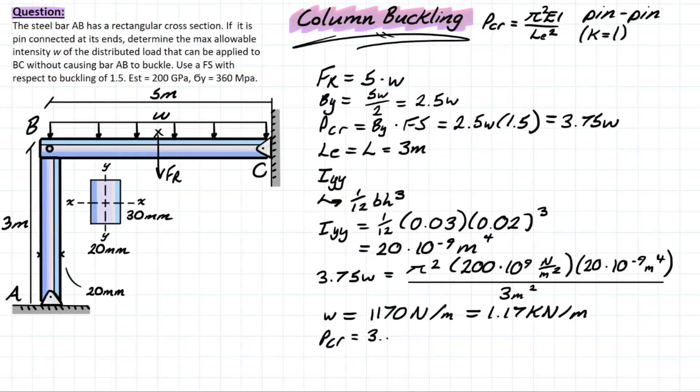Pcr is equal to 3.75 times w, so 1.17 kilonewtons per meter. This is actually a meter value, by the way. Cancelling those meters out, we are left with a value of 4.39 kilonewtons. If we do a check right now to see if we exceed our yield stress in our member, we can simply look at the critical stress—